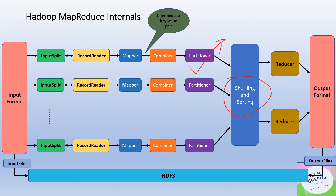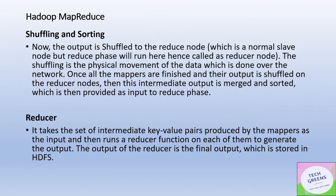Once the Partitioner has partitioned the data based on keys, shuffling happens so that all records with the same key go to the same Reducer. Shuffling is actually the physical movement of data done over the network. Once all Mappers are finished and their output is shuffled to the Reducer nodes, the intermediate output is merged and sorted, which is then provided as input to the Reduce phase. The Partitioner does the logical partitioning; the shuffling and sorting phase then physically moves the data. Records with the same key are sent to the same Reducer, sorted by key for faster data movement.